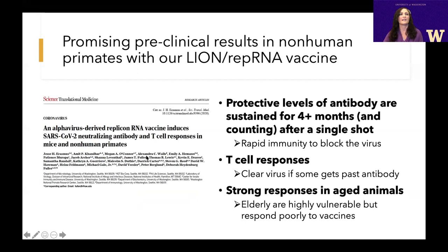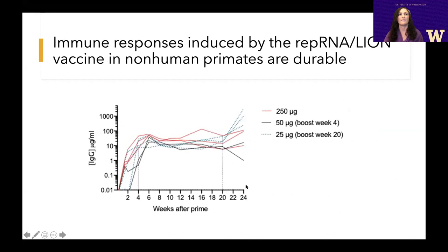We tested this vaccine in a non-human primate preclinical study, published in Science Translational Medicine. We showed this vaccine was able to induce protective levels of antibody sustained in the animals. We also showed it induced T cell responses and strong responses in aged animals, indicating we may be able to vaccinate the elderly. The latest data shows that out to six months after immunization, we're seeing a sustained antibody response in these animals — which is exciting because we want a vaccine that induces durable immunity.